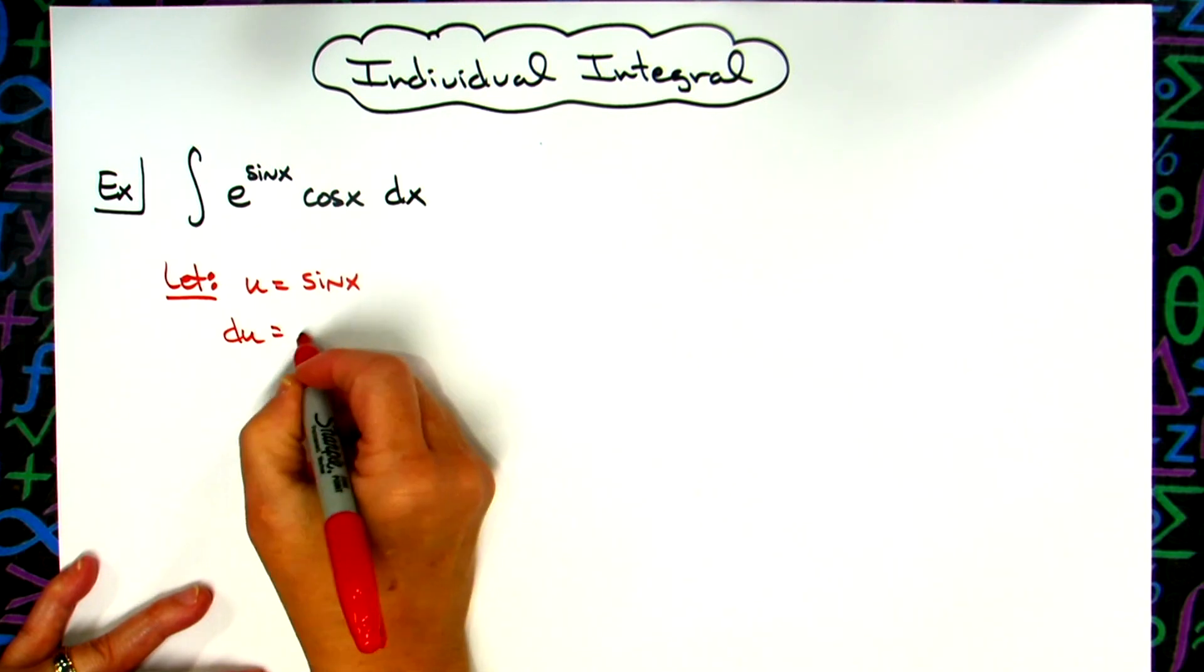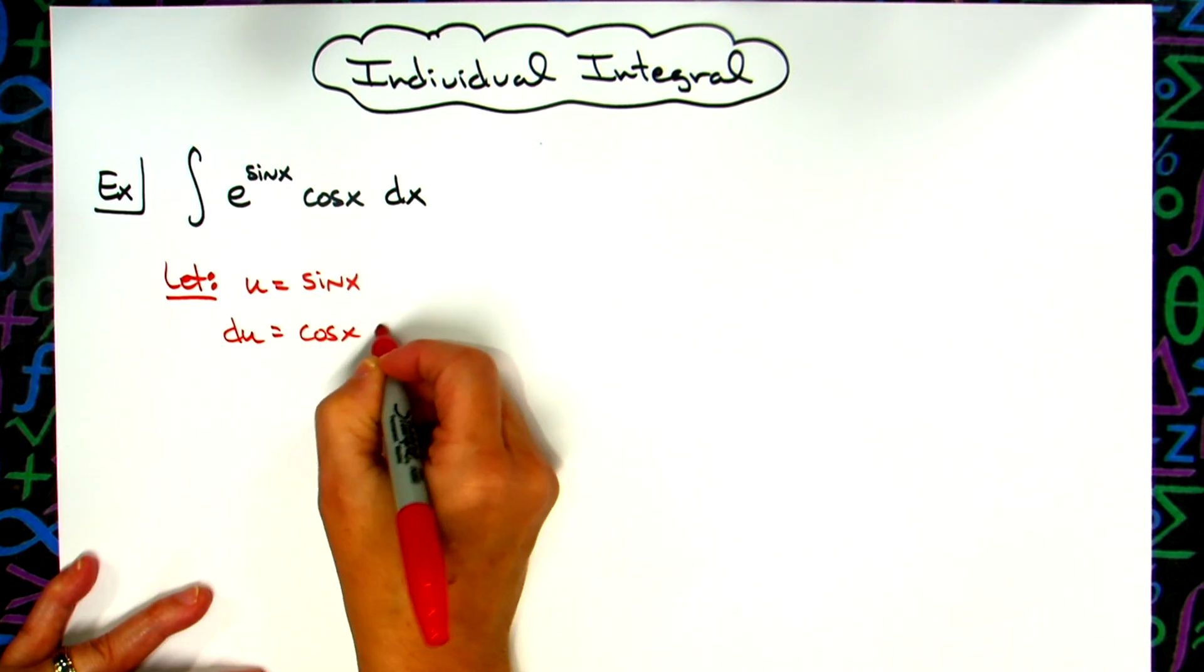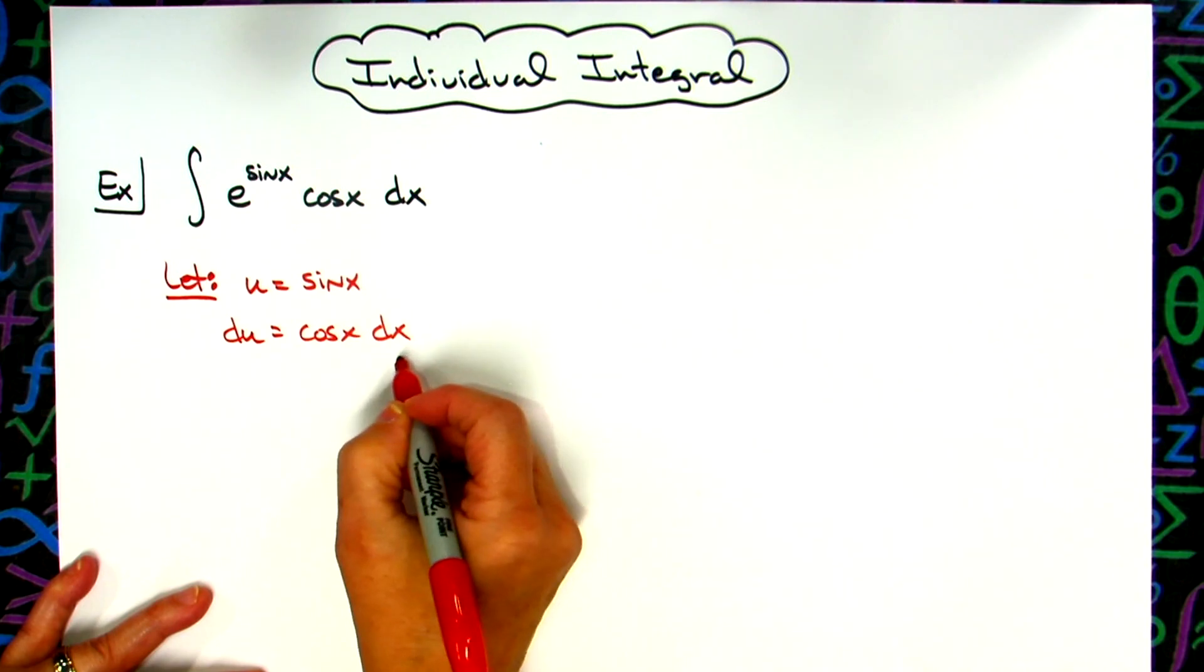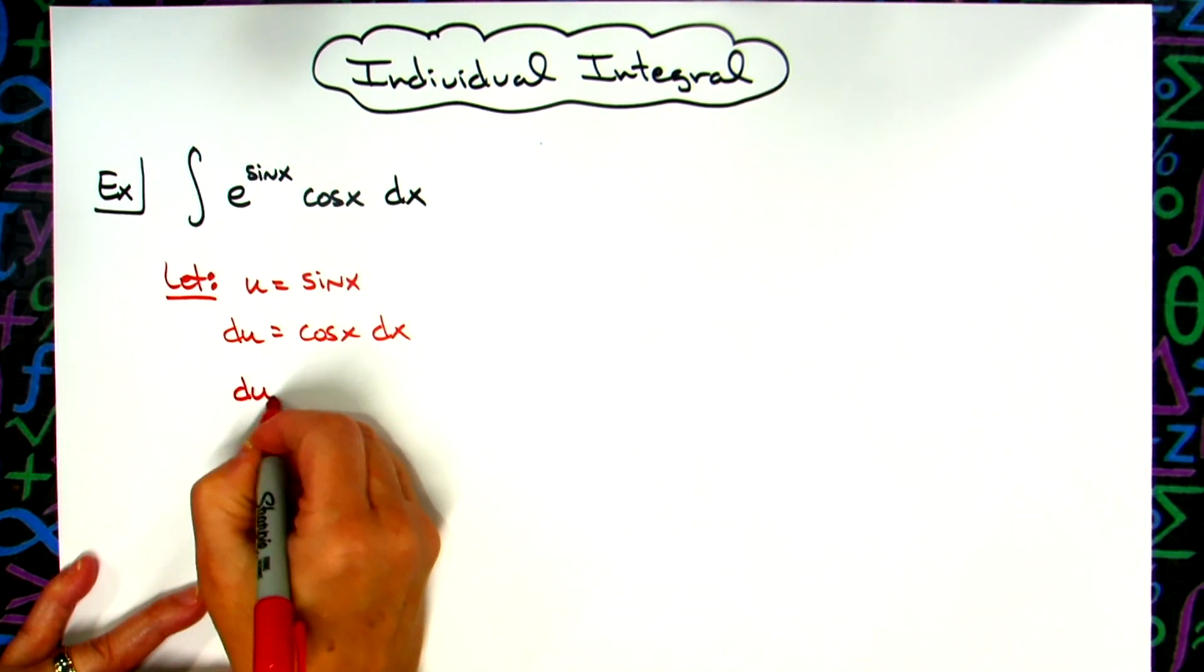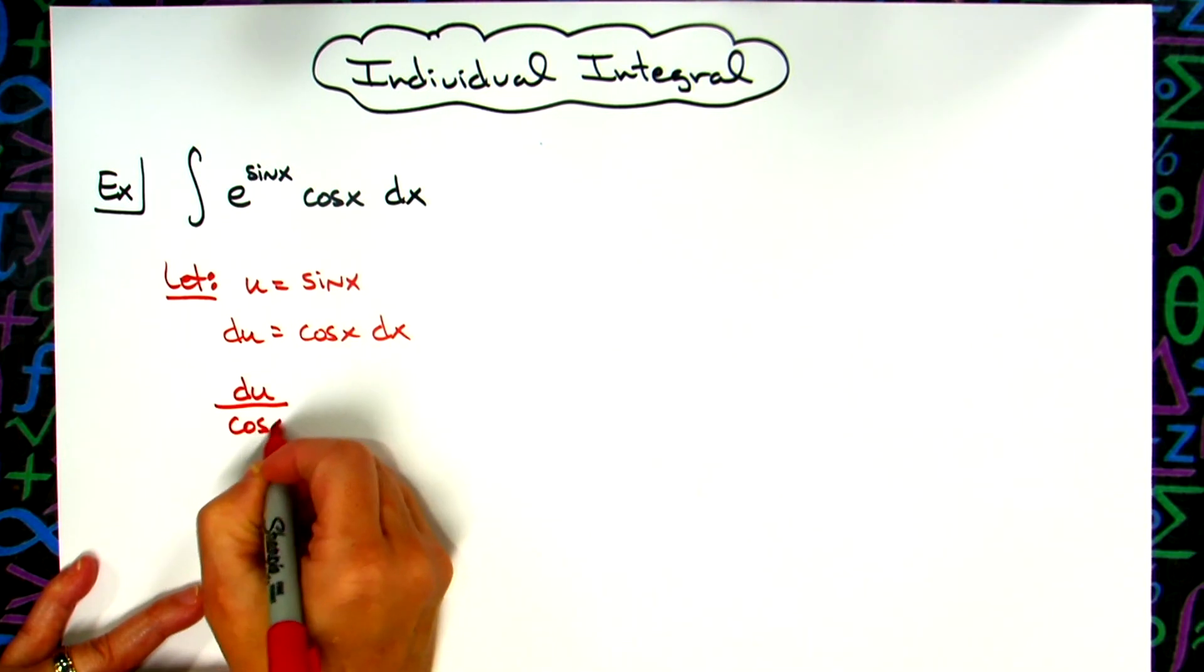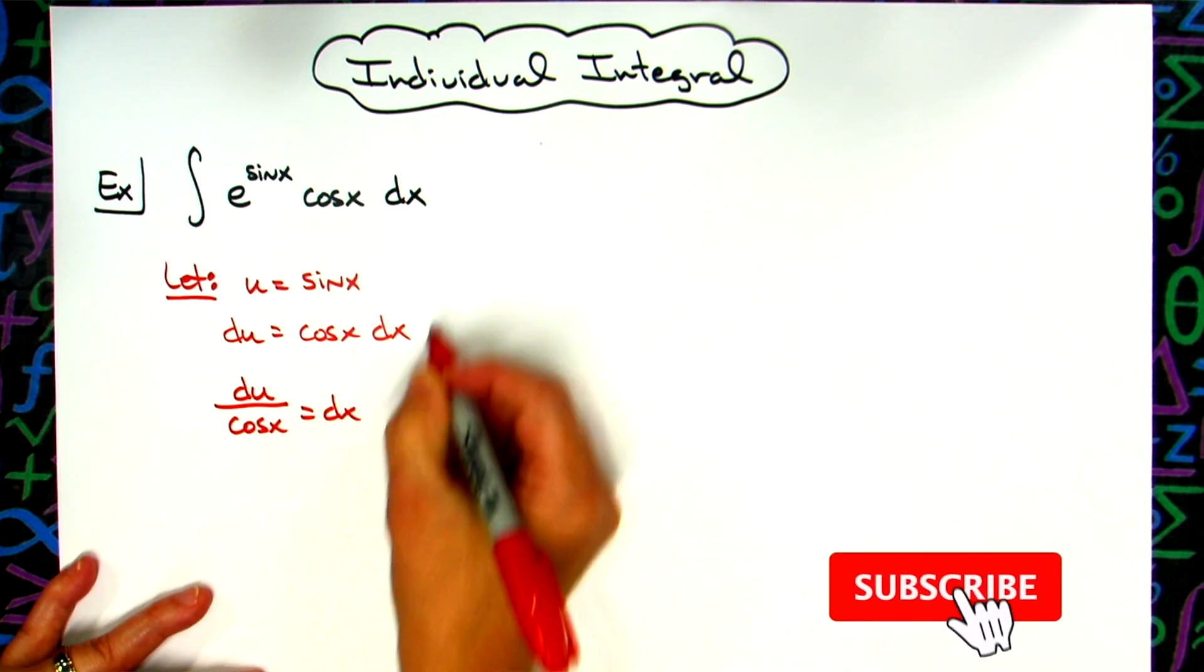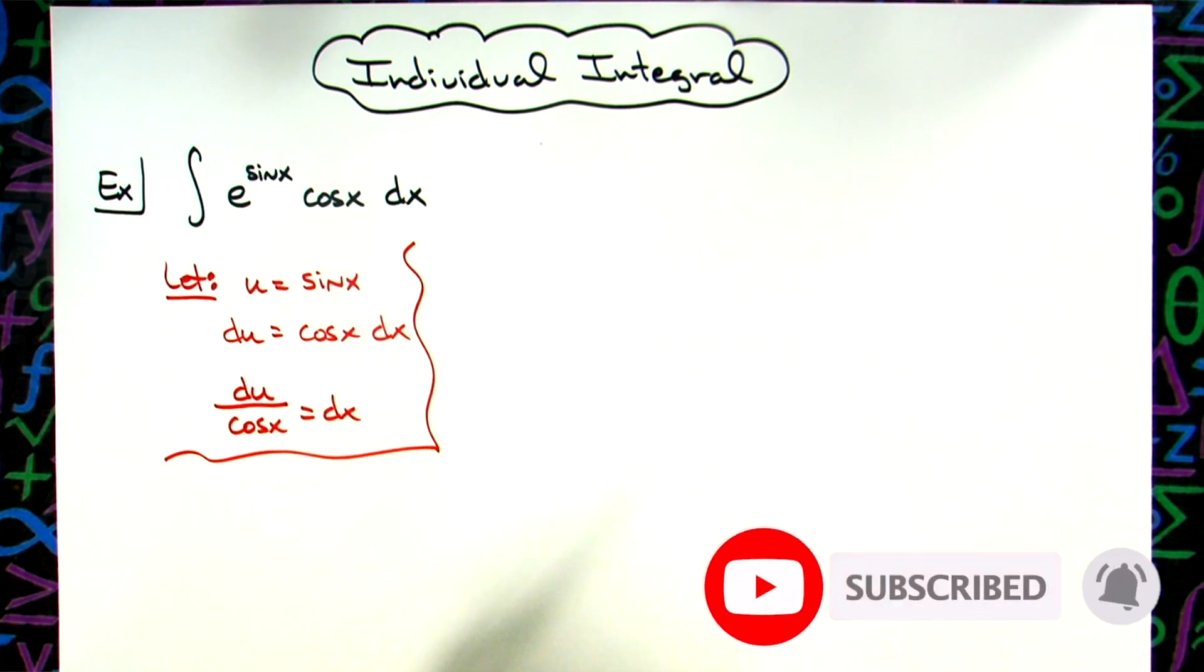We have du is equal to cosine x dx. We're going to solve all the way down for dx, so we'll have du over cosine x equals dx. At that point we're going to come back up to our original integral...